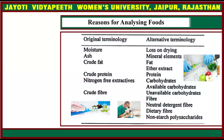Then, reasons for analyzing foods. The original terminology covers moisture, ash, crude fat, crude protein, nitrogen-free extractives, and crude fiber values in the food. Alternative terminologies include losses on drying — basically we can analyze moisture to understand what losses occur during drying.